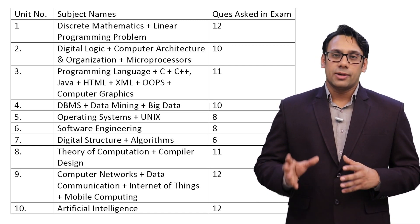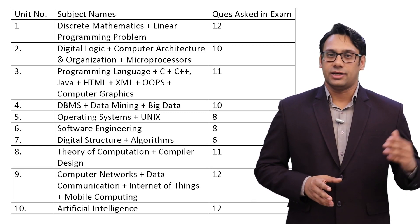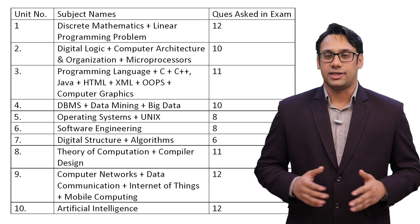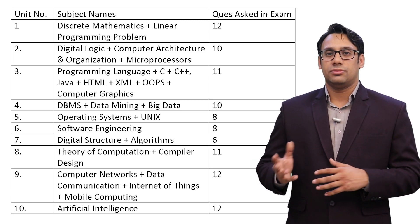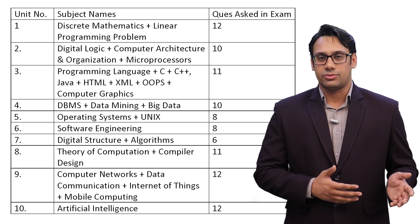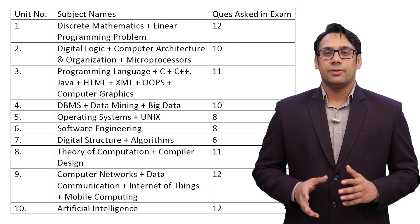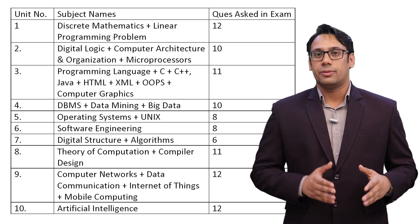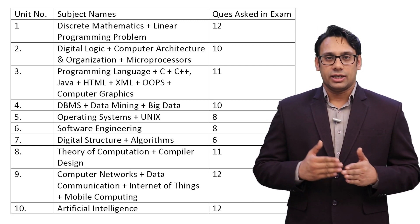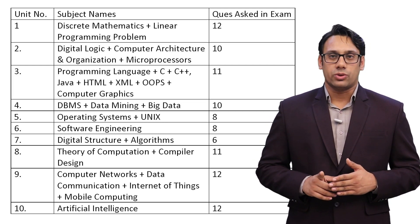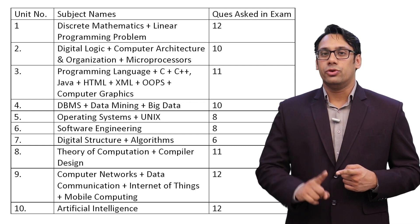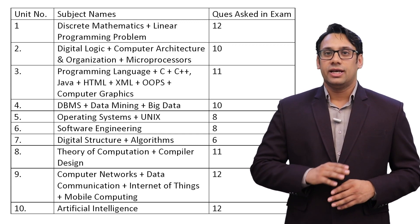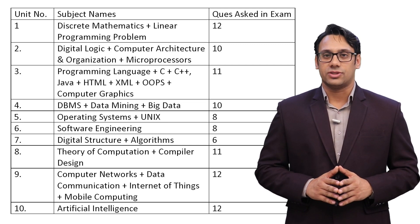Unit 8 is TOC plus Compiler Design. Compiler Design is becoming increasingly important — in July 2018 not a single question was asked from it, but now they are asking 4 questions. The pattern changes year by year, and this subject is also important for GATE preparation, so finish Compiler Design thoroughly. Unit 9 is Computer Networks, Data Communication, IoT, and Mobile Computing. IoT and Mobile Computing account for only 1 question, so Computer Networks and Data Communication — with 11 questions — are your most important focus. Last, Artificial Intelligence has 12 questions and cannot be skipped.